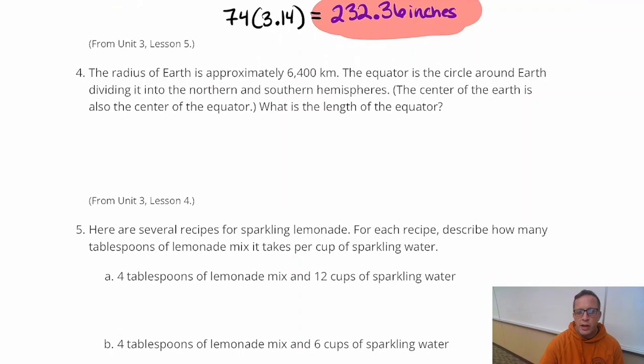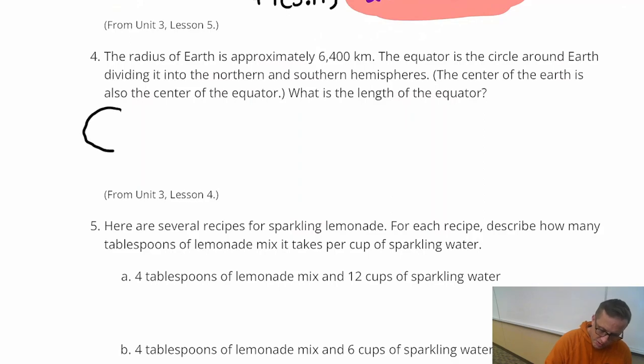Number 4. The radius of Earth is approximately 6,400 kilometers. The equator is a circle around the Earth dividing it into northern and southern hemispheres. The center of the Earth is also the center of the equator. What is the length of the equator? This is just a circumference question again. We're looking for the equator. The equator is a circle. The center of the circle is like the center of the Earth. And the radius is directly given. There's no mystery that it's 6,400 kilometers. If I figure out the diameter, that's going to be 6,400 times 2, which is 12,800 kilometers.